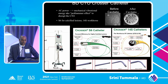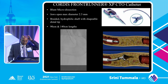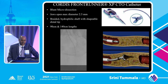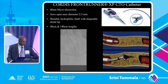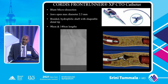There's also the Frontrunner catheter — a small device with jaws at the end that opens 2.3 millimeters in diameter, creating blunt micro-dissection. In this sped-up video you can see it creating a micro-channel within a CTO, which then allows through-and-through guide wire access.